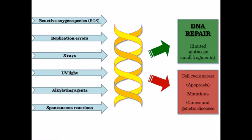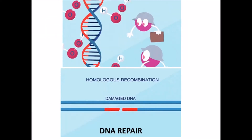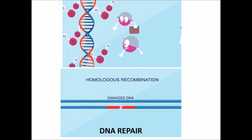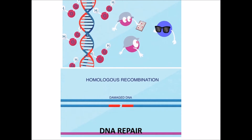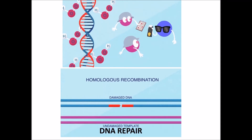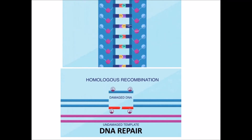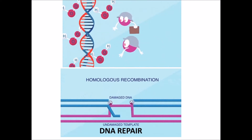Various factors like UV light and chemicals cause damage to the DNA. Normally the body repairs this damaged DNA, or the bad cells are killed by the body. Here we can see the DNA is damaged and the repair mechanism of the body comes into the picture and repairs the damaged DNA.